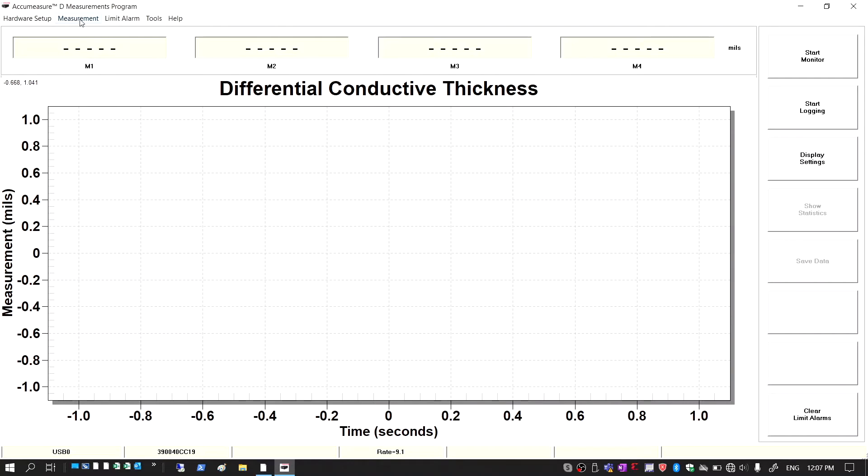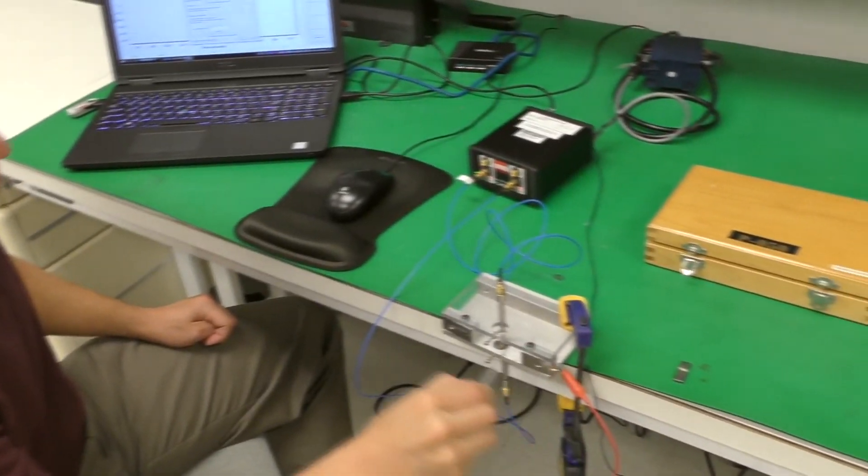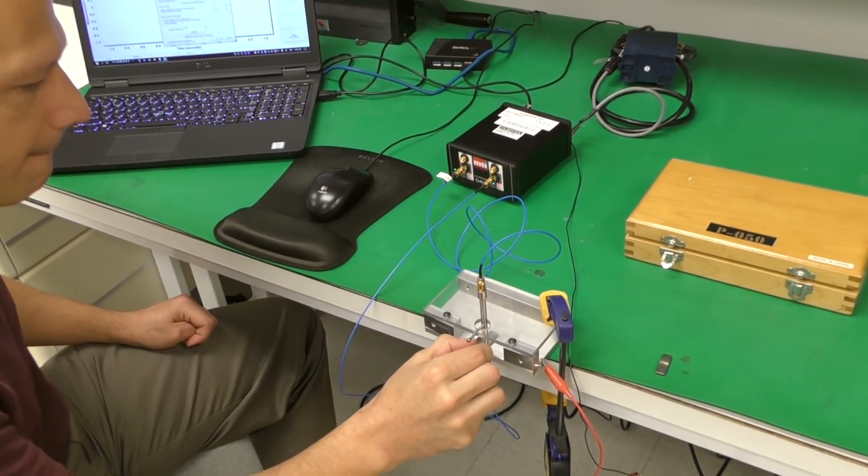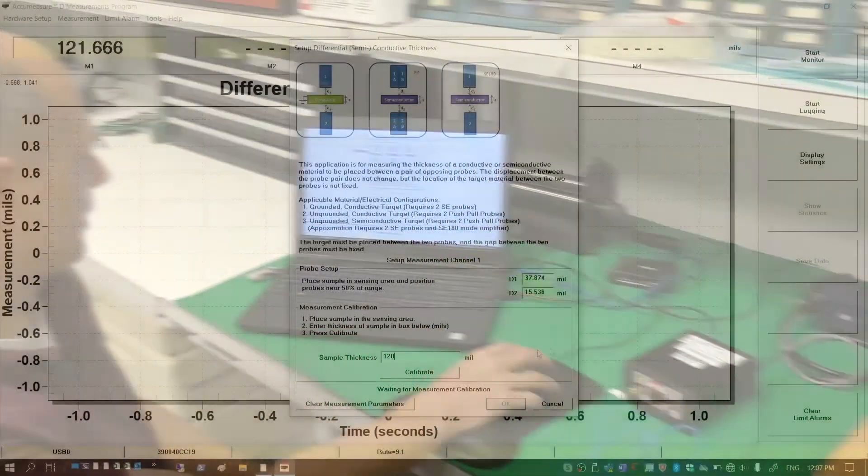Now we're going to calibrate to a known thickness block. We're going to measurement, set up channel 1, and here we're going to enter the value of the block we're going to calibrate with. In this case it's 120 mils, and we're going to place that block and then hit the calibrate button.